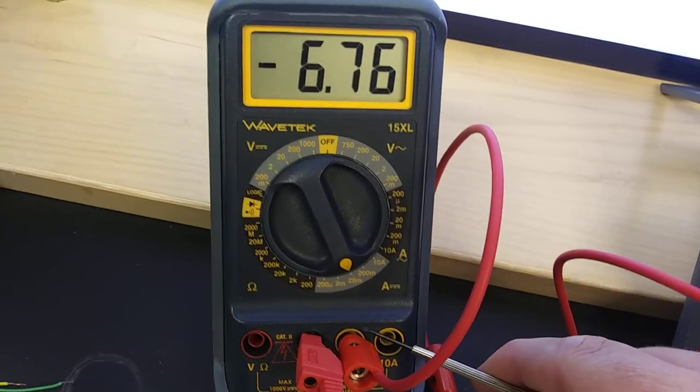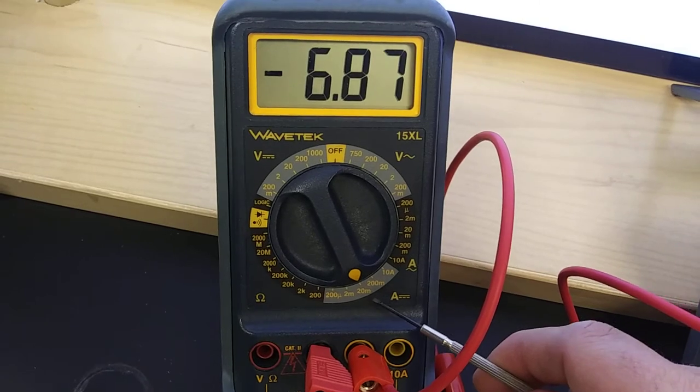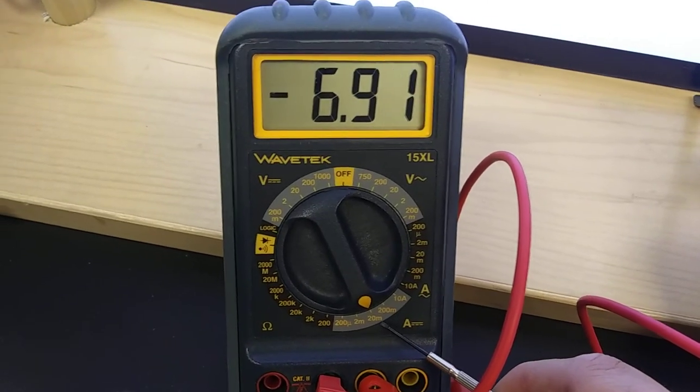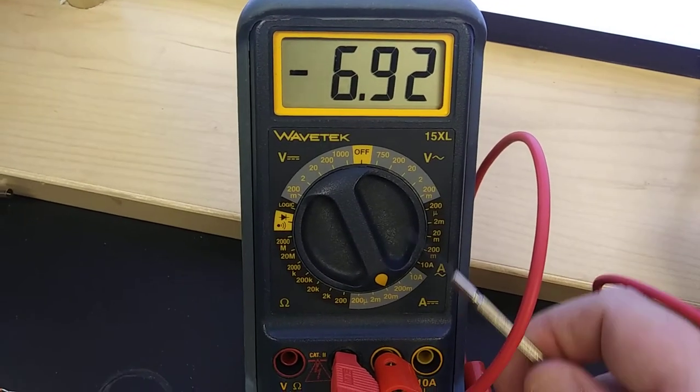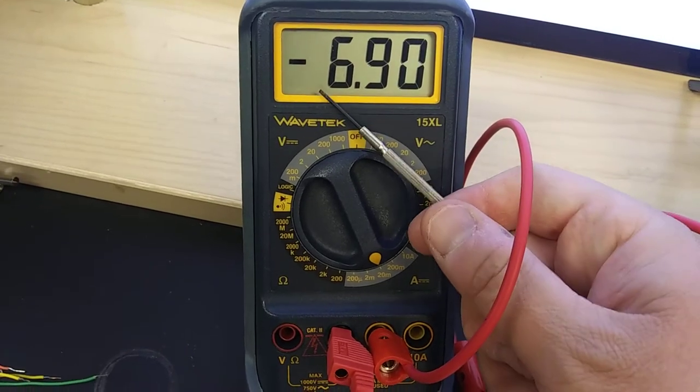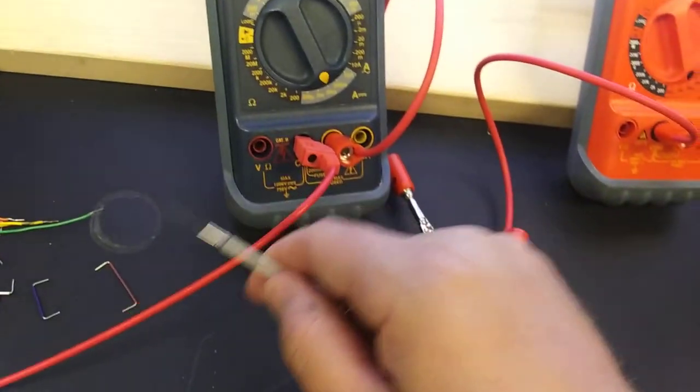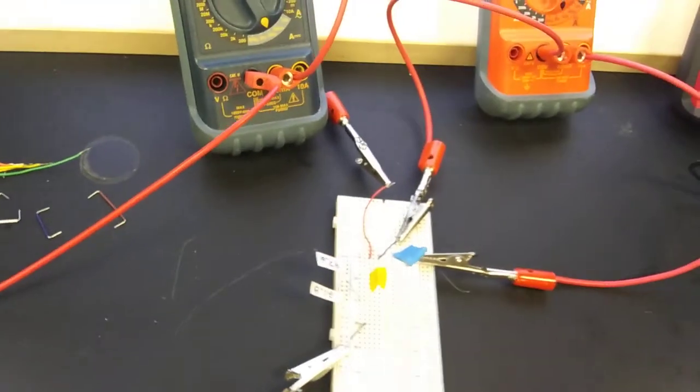This 200 milliamp dial setting. Notice the setting there, notice the reading. Ignore the minus sign. From here goes out to the positive terminal of the battery.